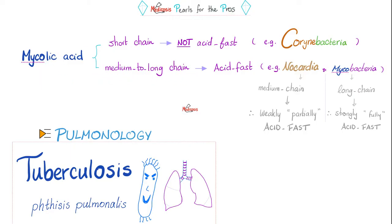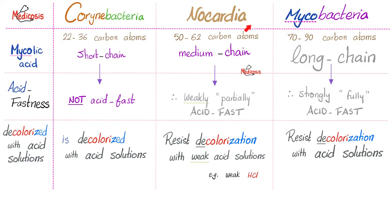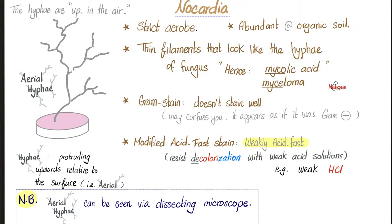If you have medium-chain mycolic acid, you will be weakly acid-fast, just like Nocardia. Please pause and review — what do we mean by acid-fast? We mean acid-resistant, i.e., resistant to decolorization with a weak acid solution. Remember Nocardia: it is aerobic, found in the soil, has aerial hyphae, does not stain well with gram stain, and is weakly acid-fast, so we use an acid-fast stain.